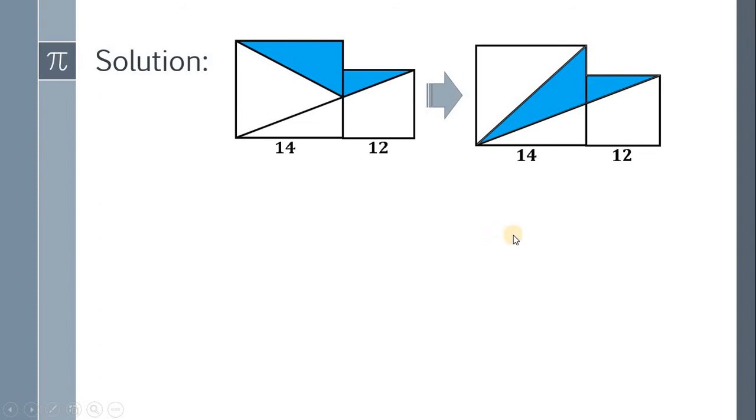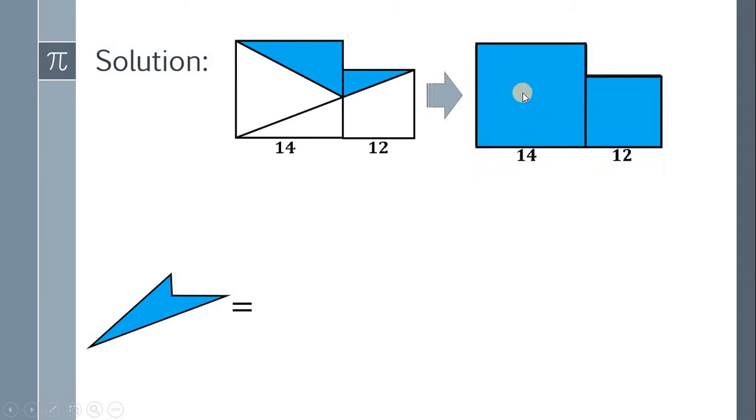At this point, we can now easily find the area of this blue shaded region. It is equal to the sum of the areas of these two squares minus the area of this right triangle, or simply half of the big square and subtract this right triangle in the bottom. So it follows.